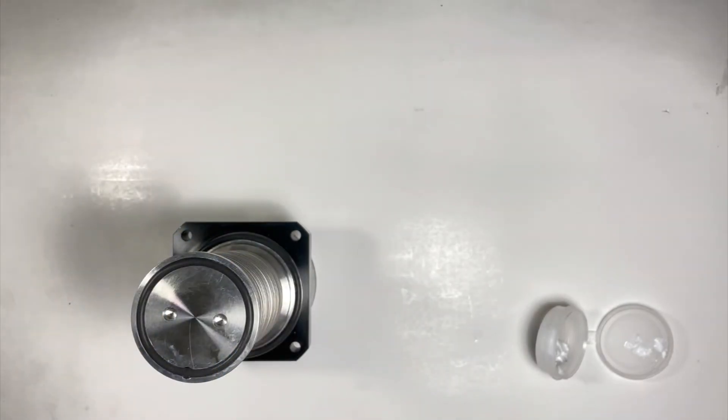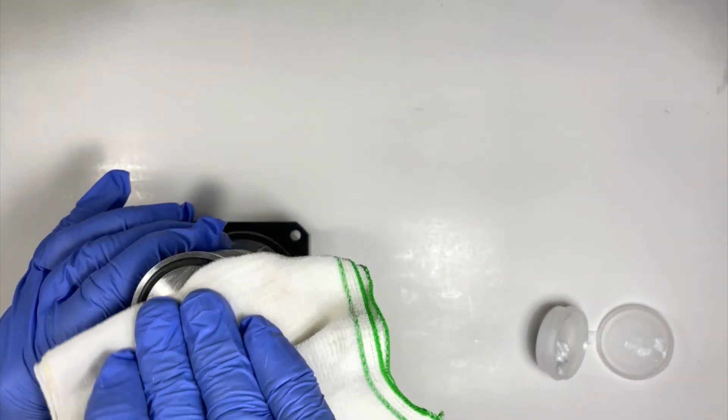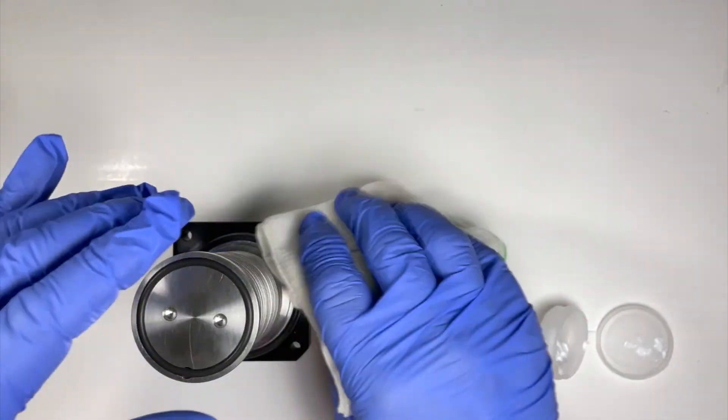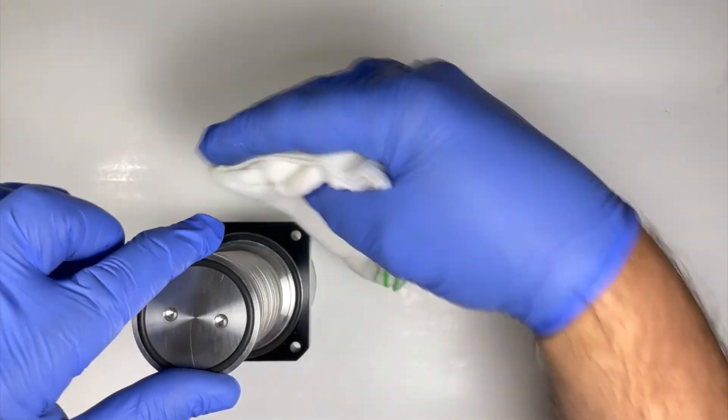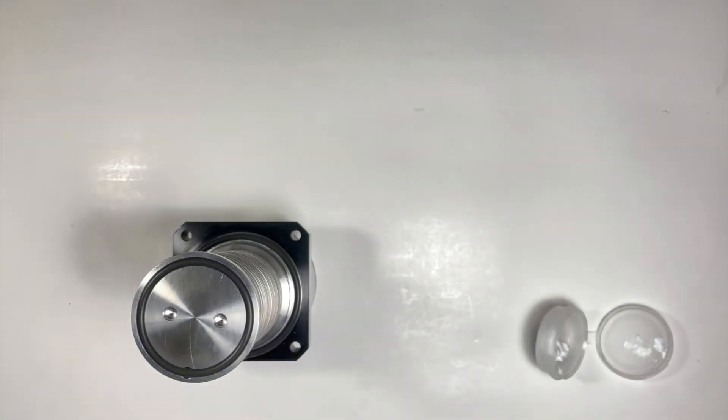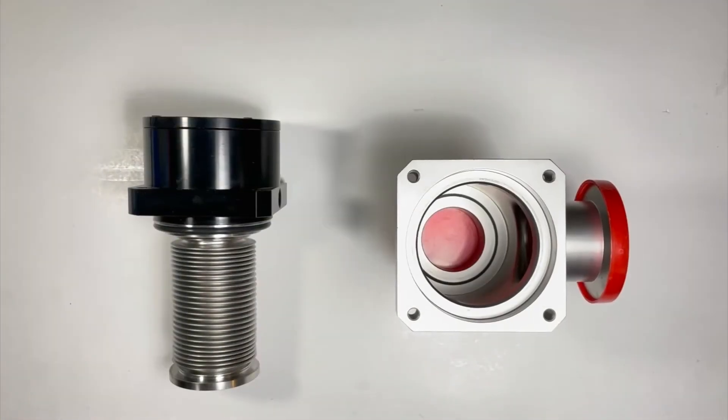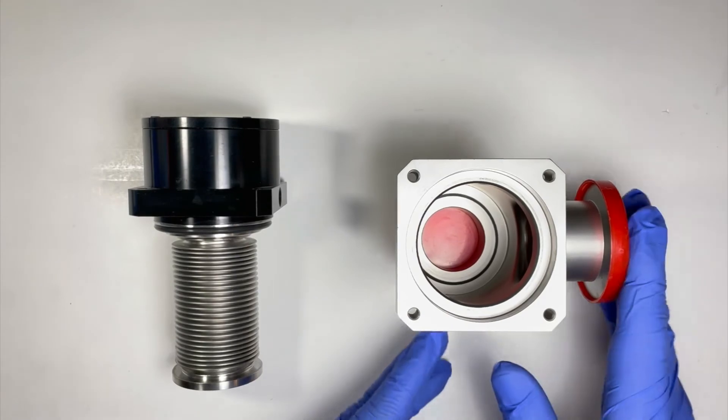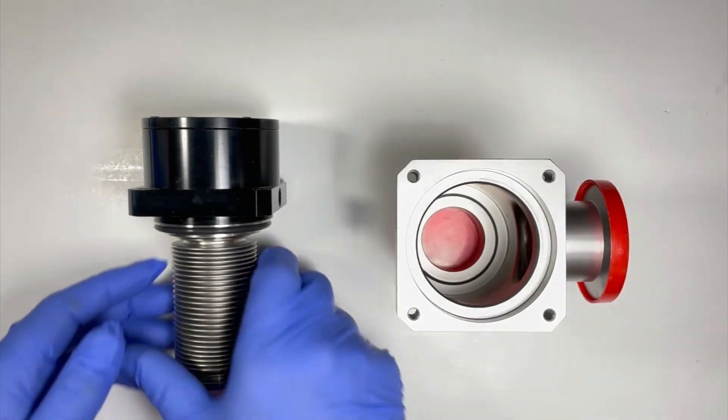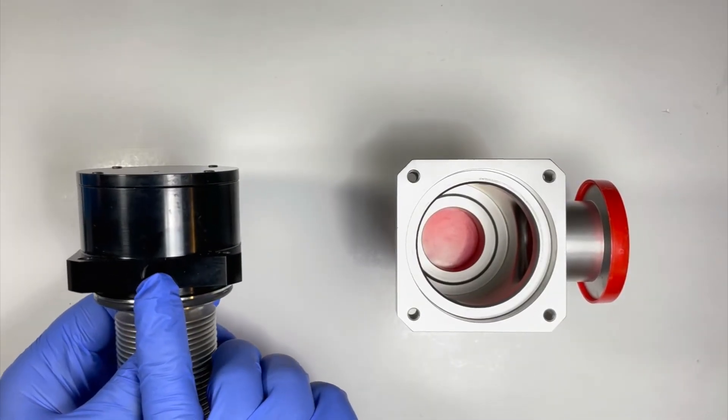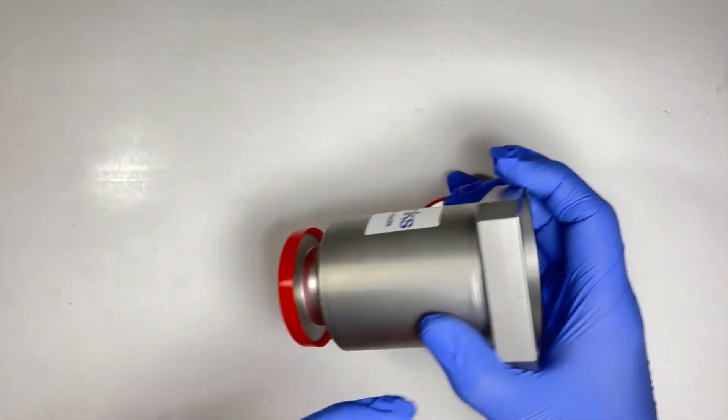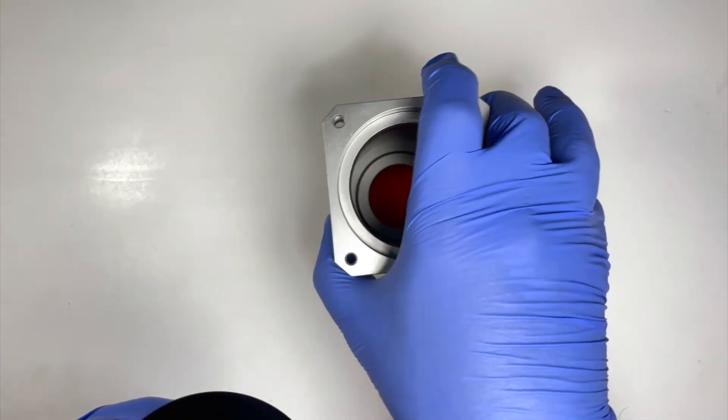Using your lint-free cloth, wipe any excess grease from the internal before installation into the valve body. Gently insert the new internals into the valve body, making sure to align the air port in the correct position as you noted on the valve during disassembly.